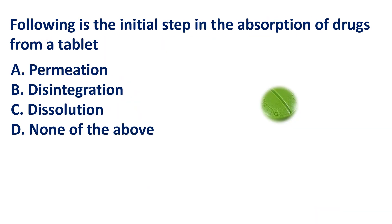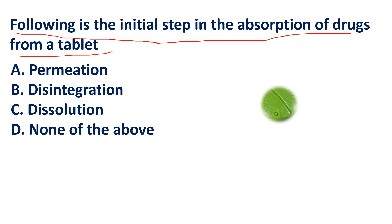Question: Which of the following is the initial step in the absorption of drugs from a tablet? The options are: permeation, disintegration, dissolution, or none of the above.